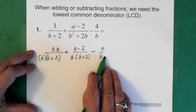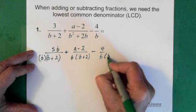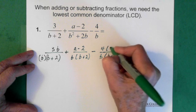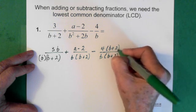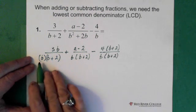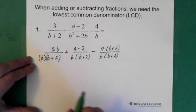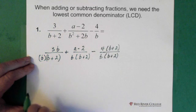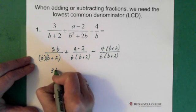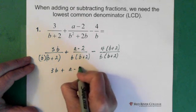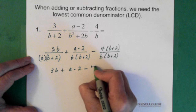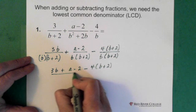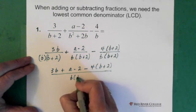And this one here has to be multiplied by b + 2. And if I multiply the denominator by b + 2, I must multiply the numerator. So now the denominators are all the same. We've made all the changes. So now the top, we can just write out the top over this one denominator. So we have 3b + (a - 2) - 4(b + 2), and this is all over b(b + 2).